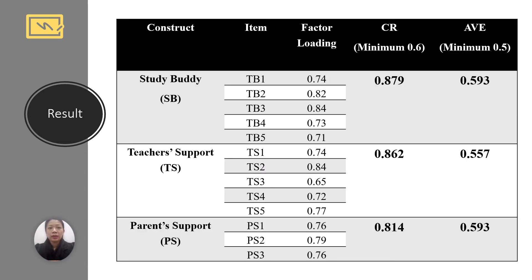Composite reliability is more than 0.6. From the table, we can see that the CR value is more than 0.6, meaning each construct achieves composite reliability. For the AVE — average variance extracted — the value is more than 0.5, which means that convergent validity for all constructs is achieved.